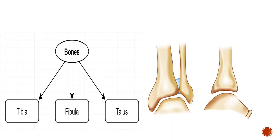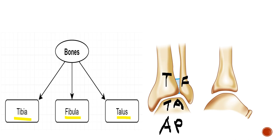The three bones are the tibia, fibula, and the talus. Marked here as T for tibia, this is your fibula, and this is your talus — shown in the anteroposterior view. In the lateral view you can see the talus, while the fibula is overlapped and not visible in this diagram.